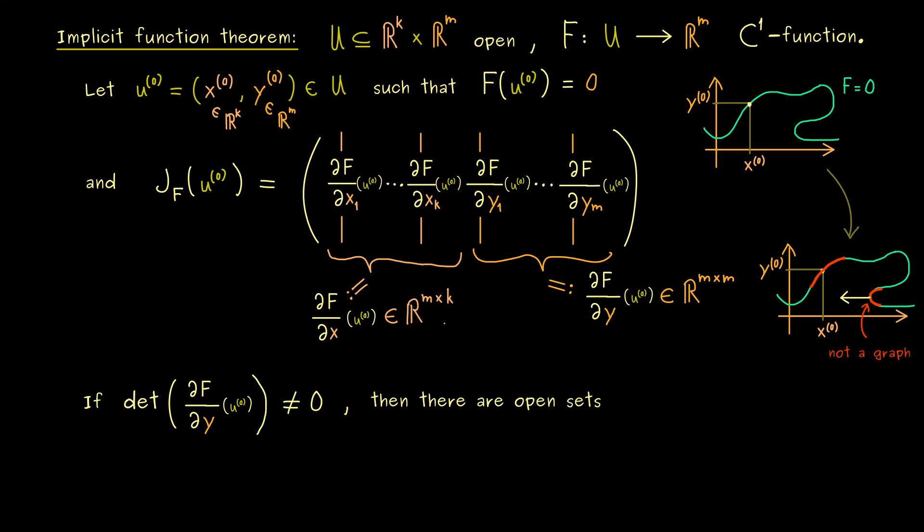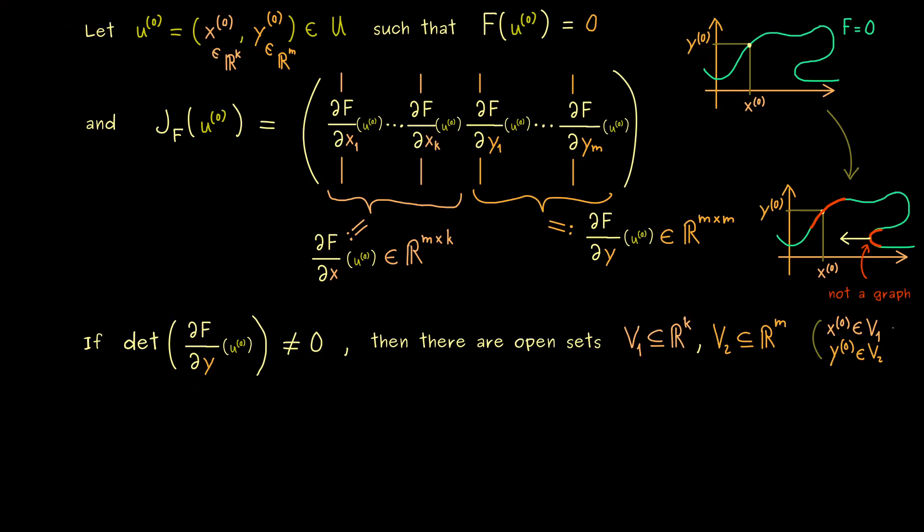And as always, we do that with open sets. So let's say we have V_1 in R^k and V_2 in R^m. And now obviously our points x^0 and y^0 should lie inside. So you could say, we found open neighborhoods for these two points. And moreover, we find a map g from V_1 to V_2. More precisely, it's also a C^1 function. And the graph of this function is the one we are interested in.